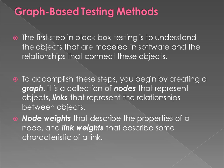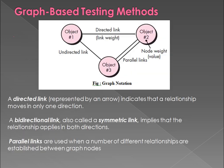Graph-based testing can be implemented in a graphical manner. It is a collection of nodes which represent objects, and links which represent the relationships between objects. There are also node weights and link weights — node weights describe the properties of nodes, and link weights describe the characteristics of the link established between two objects.